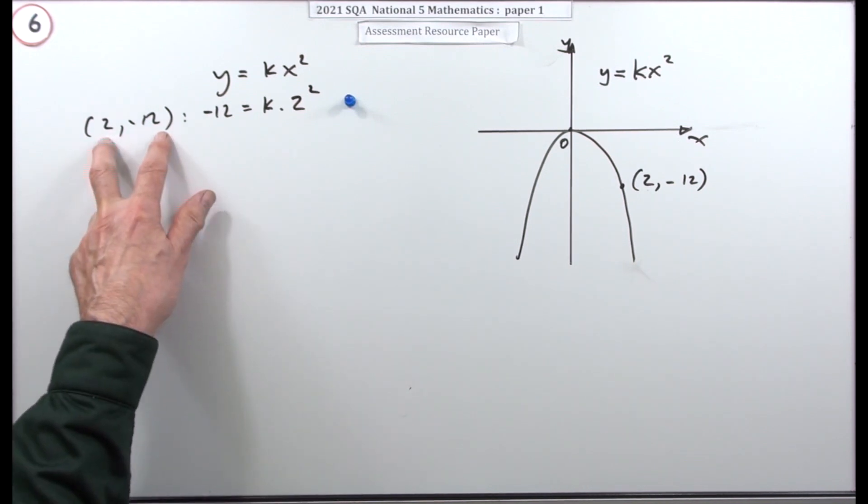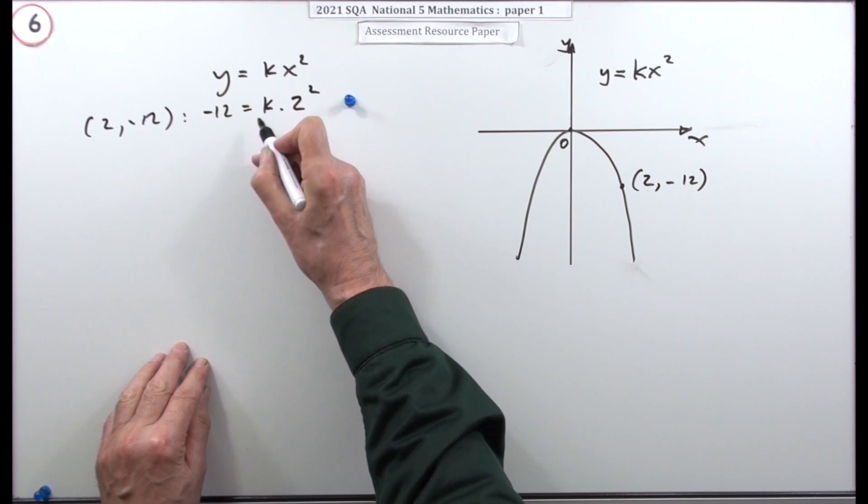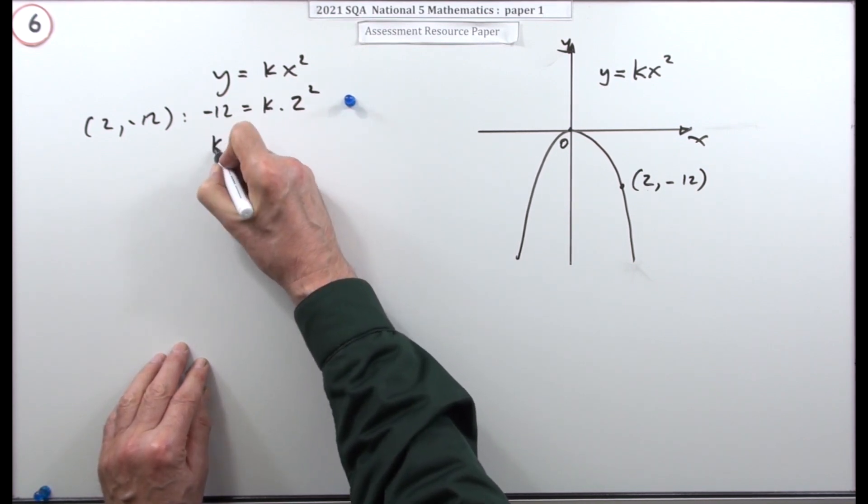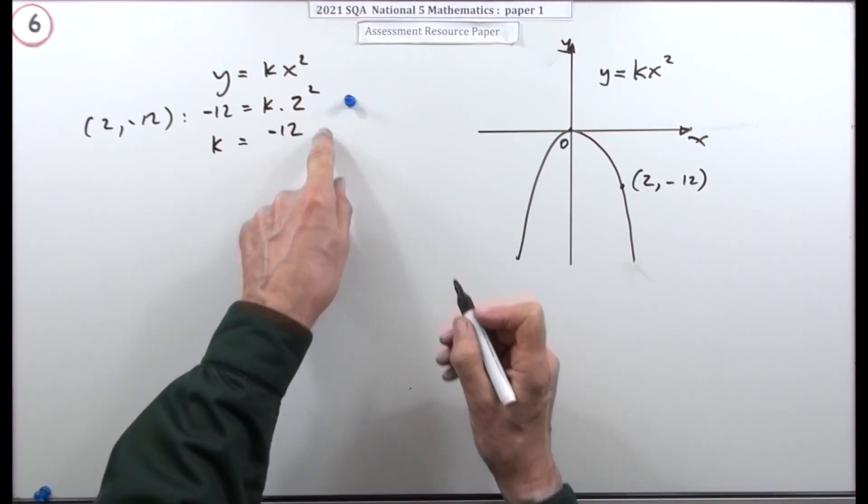That just leaves that unknown. So that means k is going to be—it was -12 getting multiplied by 4, so divide by that 4—k is -3.